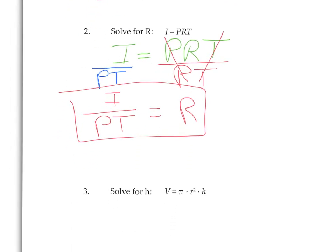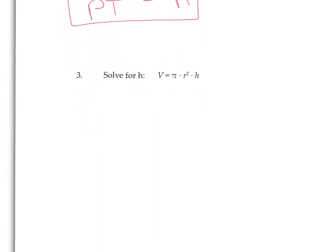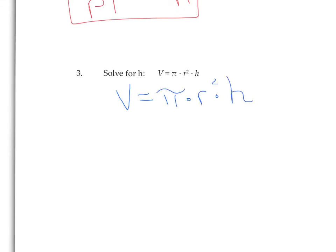Use whatever operations you need and undo what's happening. This is the formula for volume of a cylinder. Volume equals pi times R squared, R's radius, times H, which is height. Solve for H. So we're going to isolate this H. I'm going to rewrite this formula. V equals pi times R squared times H.